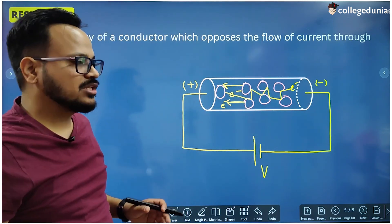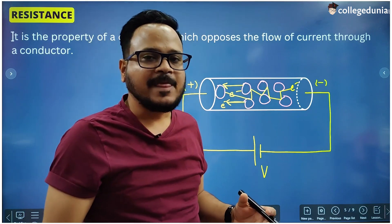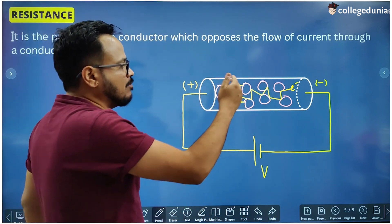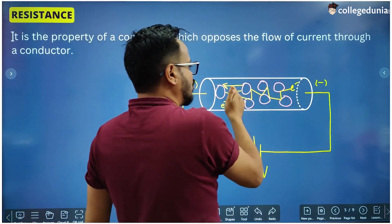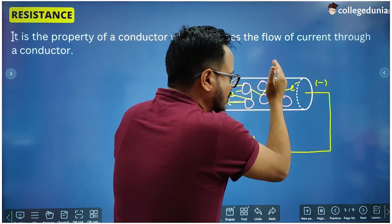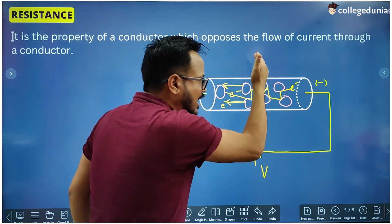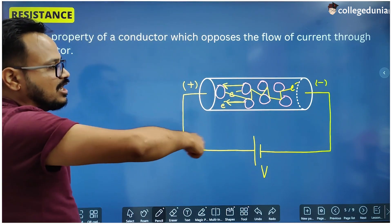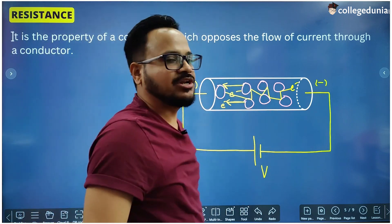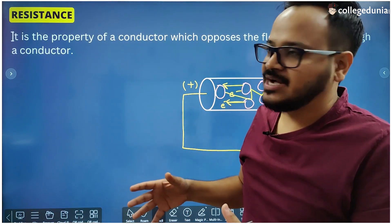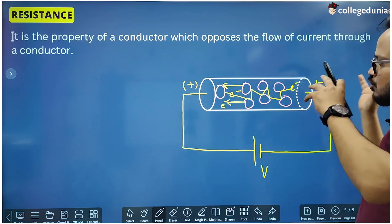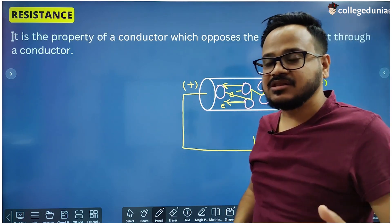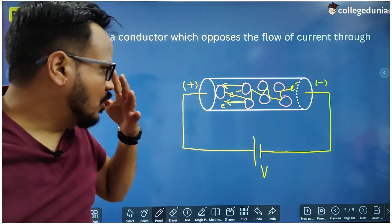Since the electron takes more time to travel from one point to another, the current will be less. Current is simply the amount of charge passing through a cross-section per unit time. If the electron takes more time, less charge crosses per unit time through the conductor, which decreases the current. This continuous collision of electrons with the positive ions is collectively called resistance — this is the reason for resistance.